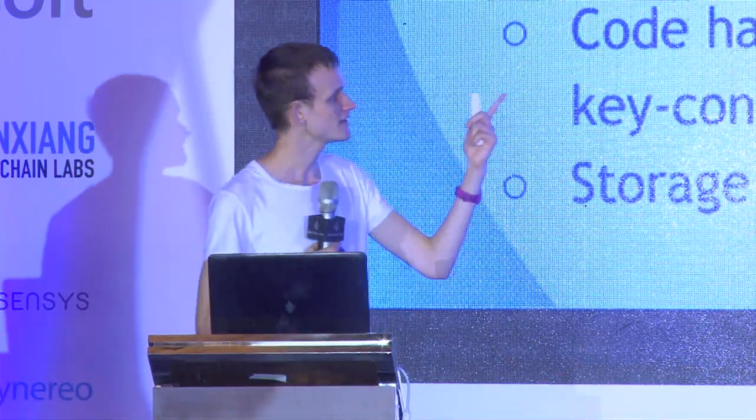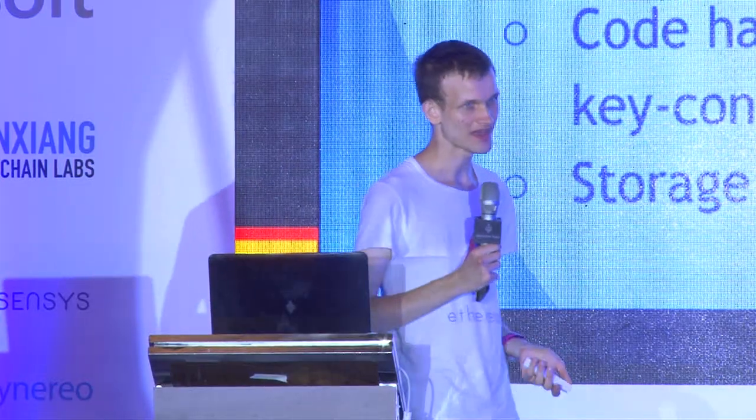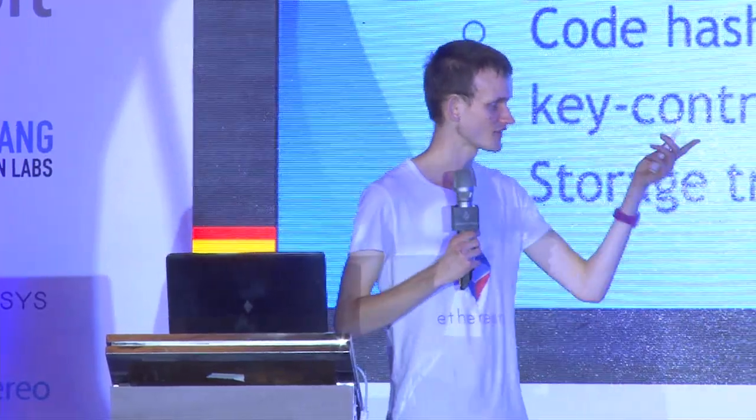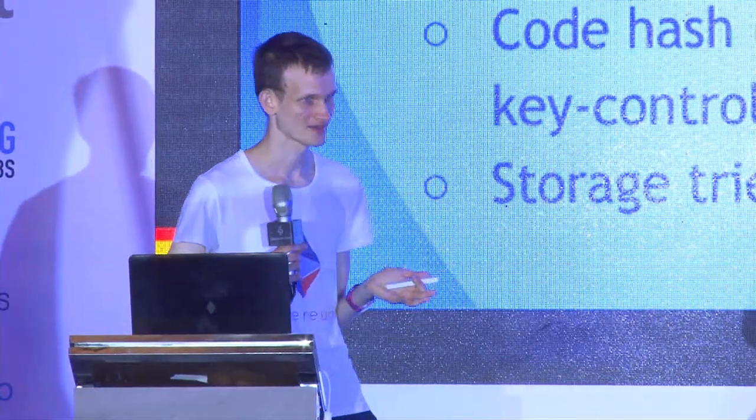The state in Ethereum is basically a key-value mapping of account objects. There are two types of accounts: one controlled by a person (or external user — or a fridge, or a dog), and the other controlled by code. These accounts have four pieces of data: the nonce (prevents transaction replay attacks), the balance (how much ether the account has), the code, and the storage tree root, which points to that contract's storage. Every contract has its own sub-database it can read and write to. Contracts cannot write to other contracts' storage databases.